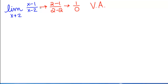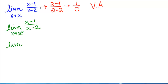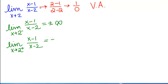Now that we know we're dealing with a vertical asymptote, we look at the limit from each side: the limit as x goes to 2 from the left, and the limit as x goes to 2 from the right. We know the answers for those one-sided limits have to be either positive or negative infinity. But how do we know which one it is?